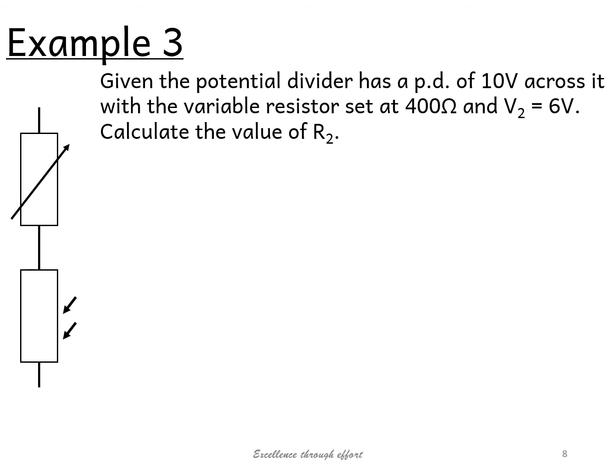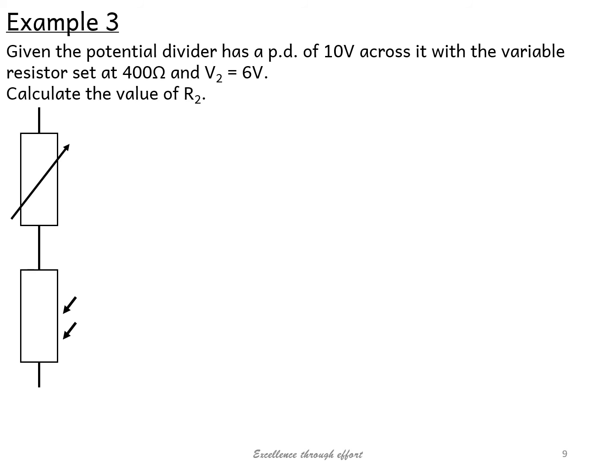First of all, when we do this question here, we need to look at what the values mean. So first of all, we know that we've got a potential difference of 10 volts across both of this. We know that this one here is R1, just so we know which one we're talking about, and this is 400 ohms. So you may find it useful to draw out the circuit and label it.